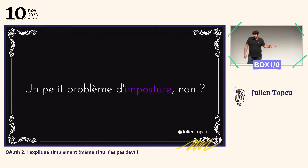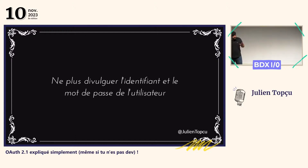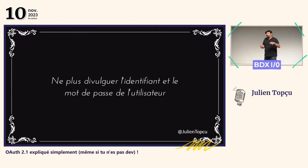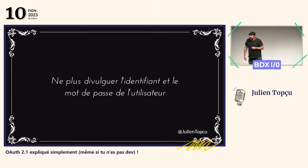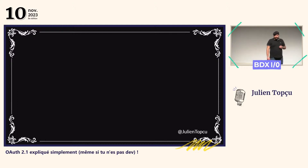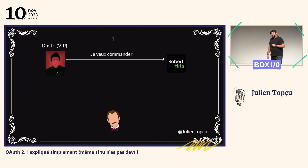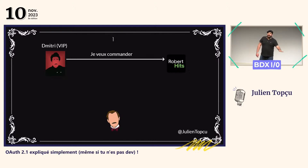Il ne faut jamais faire ça. Comment va-t-on faire pour éviter ce problème ? C'est assez simple : approche naïve, on va arrêter de divulguer les identifiants et les mots de passe de nos convives à un tiers comme Robert Ritz, pour éviter que Robert Ritz fasse des choses malveillantes avec. Du coup, on a complètement changé notre process de commande. Maintenant, Dimitri, quand il veut commander une pâtisserie, on lui a dit : « Plus jamais tu files ton mot de passe à Robert Ritz. » Et pareil, on a demandé aux gens de Robert Ritz de ne plus jamais demander les mots de passe de nos convives.